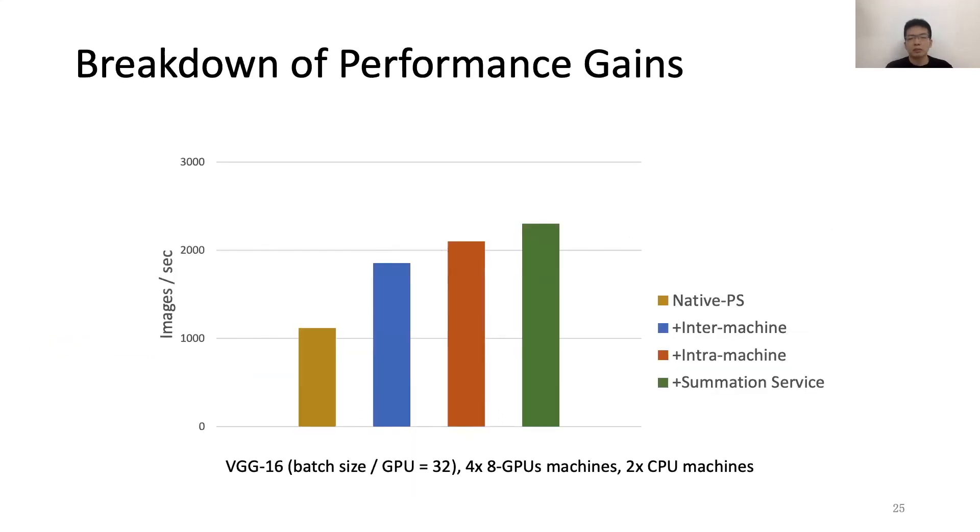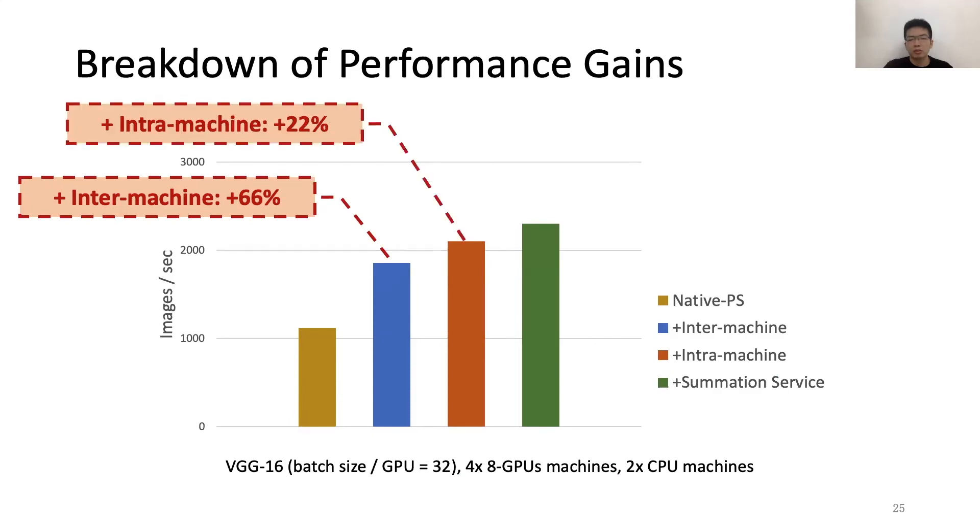We also analyze the breakdown of the performance gains. We compare the performance with native PS using four GPU machines and two CPU machines. We see that with inter-machine optimization, we have 66% gain. And with intra-machine optimization, the gain is 22% more. And with Summation Service, we have 80% more gain.